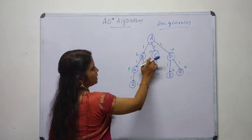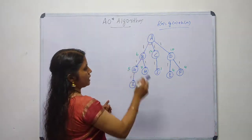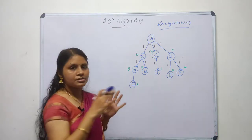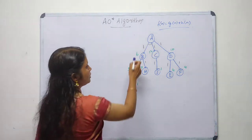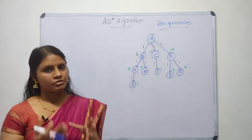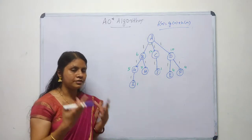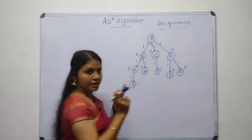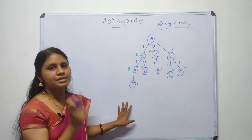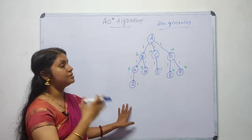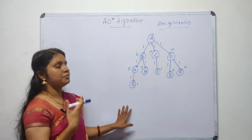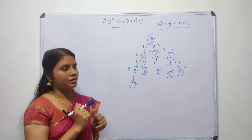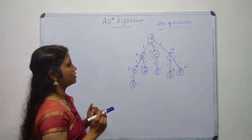The formula used is F(N) = G(N) + H(N), where G(N) is the actual cost and H(N) is the heuristic value. The algorithm always moves towards the lower cost value. Starting from A, we have two choices: A to D, or A to BC. Let's calculate the cost for each.